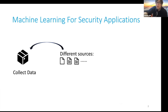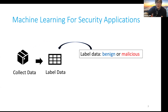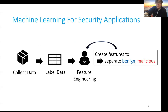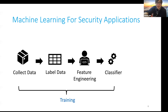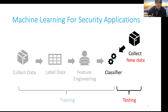Machine learning is a powerful tool for security applications. Here is how machine learning works for security. In the beginning, you collect some data, then label them either benign or malicious. You use your domain knowledge to design features to separate benign and malicious, then propose a machine learning model to do the classification. The first four steps are the training phase. In the testing phase, you collect new data and test your proposed model to see how robust your feature engineering and model are.